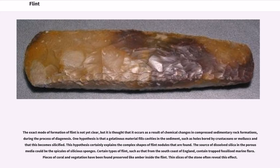The exact mode of formation of flint is not yet clear, but it is thought that it occurs as a result of chemical changes in compressed sedimentary rock formations during the process of diagenesis. One hypothesis is that a gelatinous material fills cavities in the sediment, such as holes formed by crustaceans or molluscs, and that this became silicified. This hypothesis certainly explains the complex shapes of flint nodules that are found.